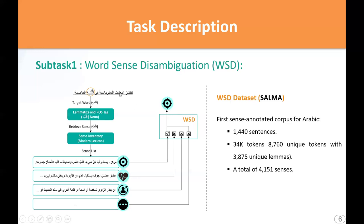So imagine we have a sentence, a target word, and a set of possible meanings for that word. The task is to identify which meaning fits the context. For this, participants are provided with the Salma Corpus, the first sense-annotated corpus for Arabic. It includes 1,440 sentences and 34,000 tokens. The participants received a development set of 100 sentences and a test set of 1,340 sentences.